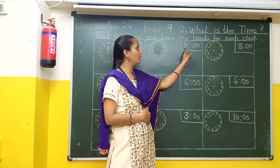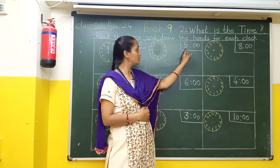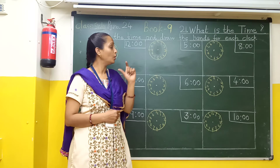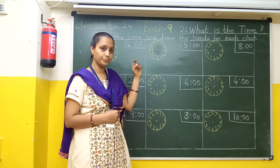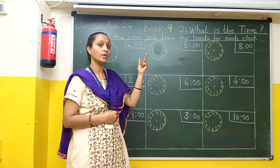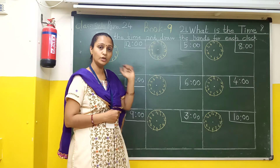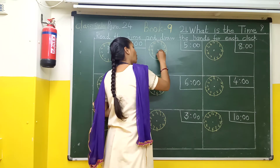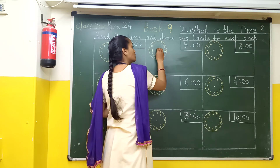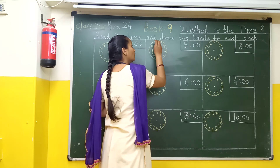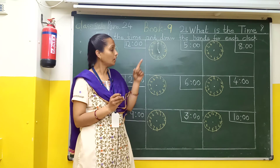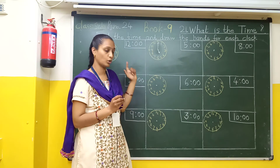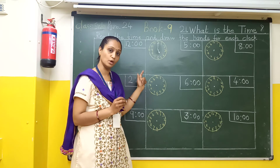Here there is a question — we will draw 5 o'clock. For that we have to draw the small hand and the big hand. The minute hand will be on 12. So here students, we will draw the small hand on 5, and the big hand on 12. This is known as 5 o'clock. And this way you will also draw.